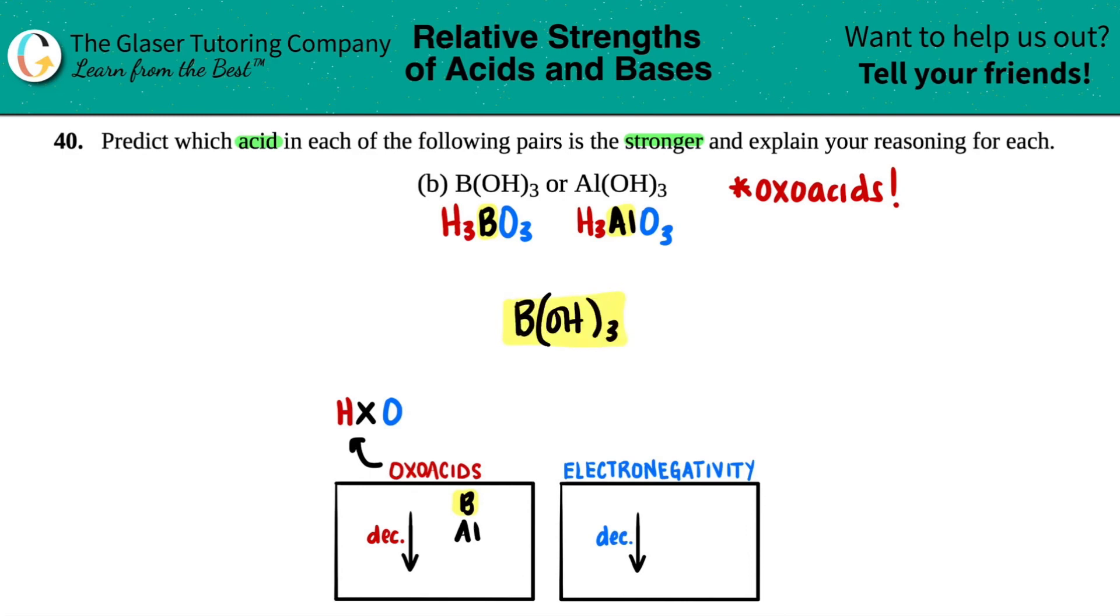Now we just have to give an explanation. When you're going down a group with oxoacids, the best explanation is because of the electronegativity. As you're going down a group, electronegativity decreases, which means that boron on top would have a higher electronegativity than aluminum.